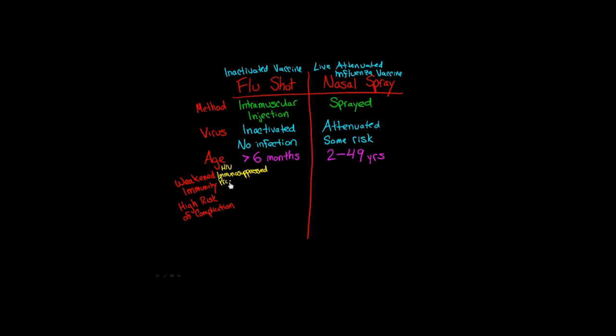Pregnancy can also weaken the immune system. And then people who have close contact with patients who are immunosuppressed, we're also going to put them in this category because we want to make sure that they don't transmit the influenza virus to someone who has a weakened immune system.